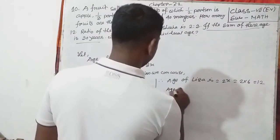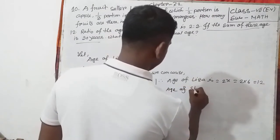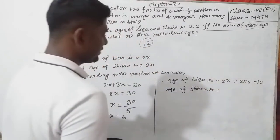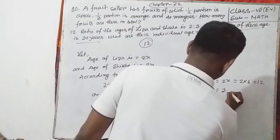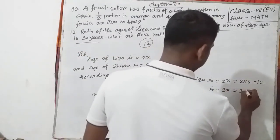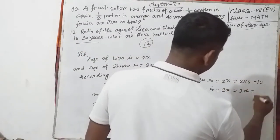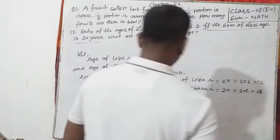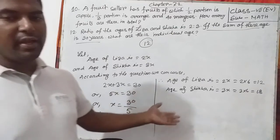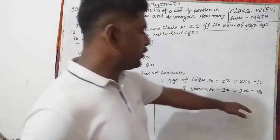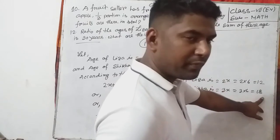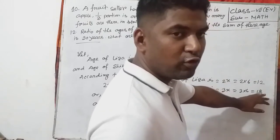Age of Sheikha is 3x. Putting the value of x: 3 into 6 equals 18. So age of Lisa is 12 years old and age of Sheikha is 18 years old. Total sum: 12 plus 18 equals 30.